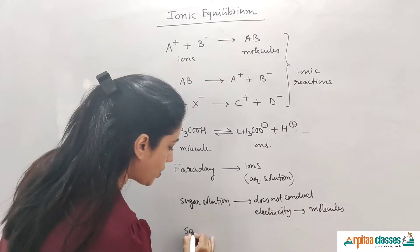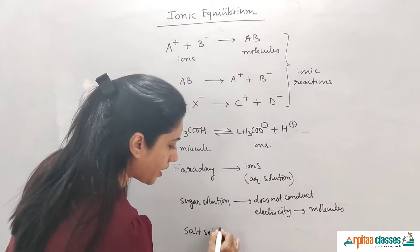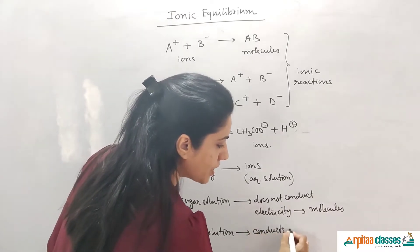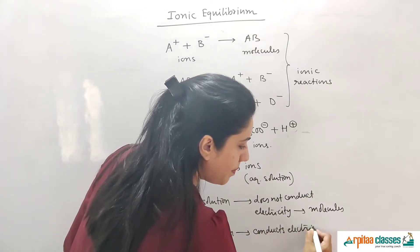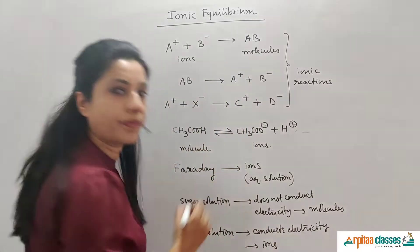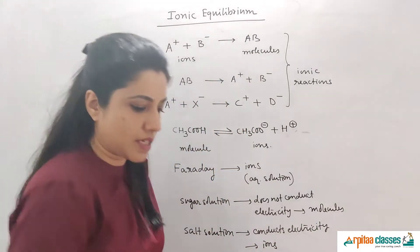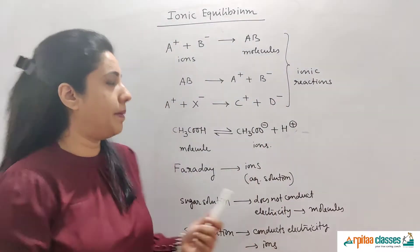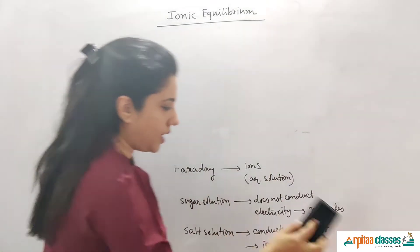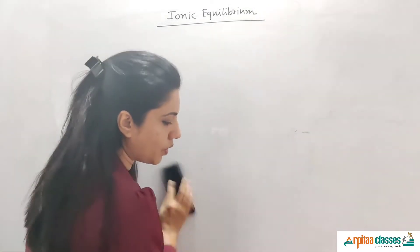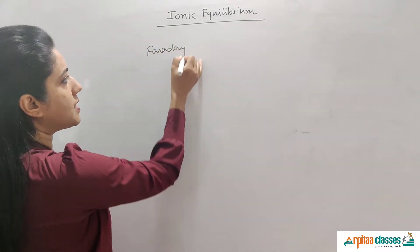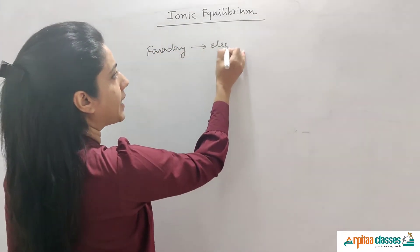On the other hand, Faraday took some salt solution and observed that it conducts electricity, meaning salt solution contains ions. On the basis of this, Faraday divided all solutions into two parts and called them by different names. Basically, he gave the name 'electrolytes.'